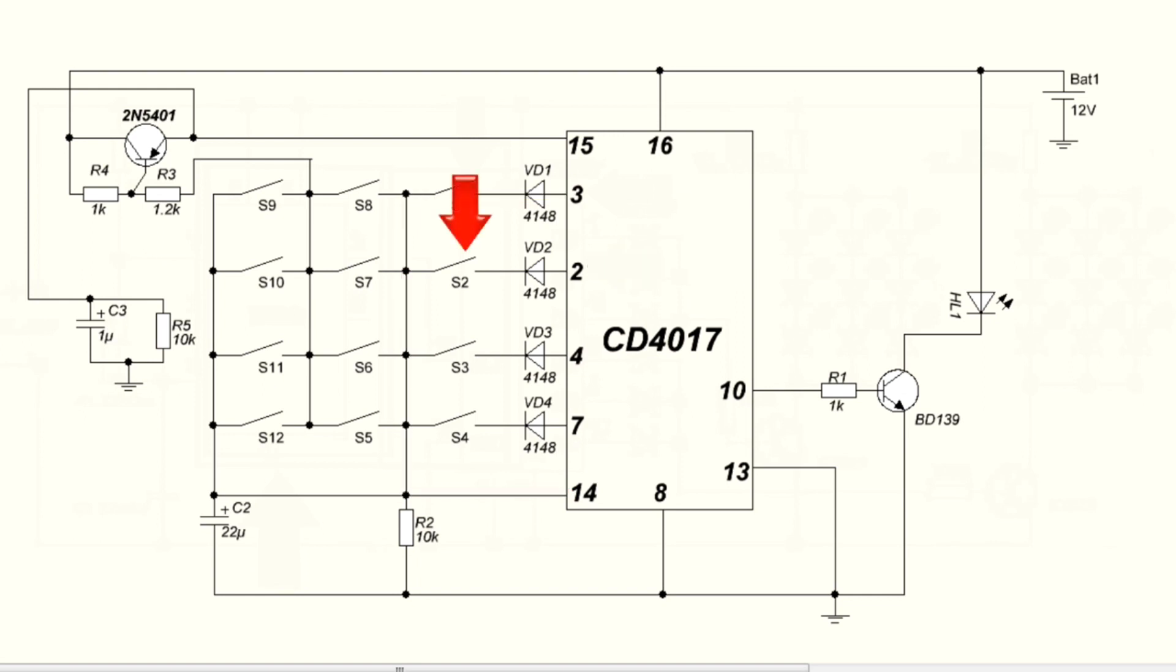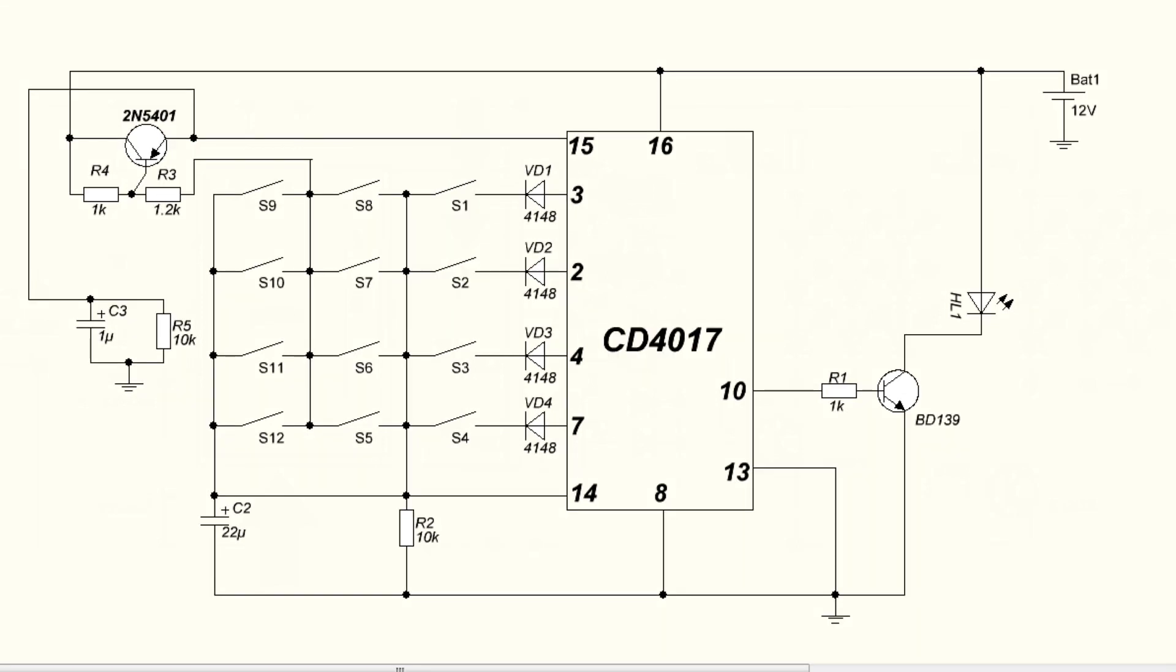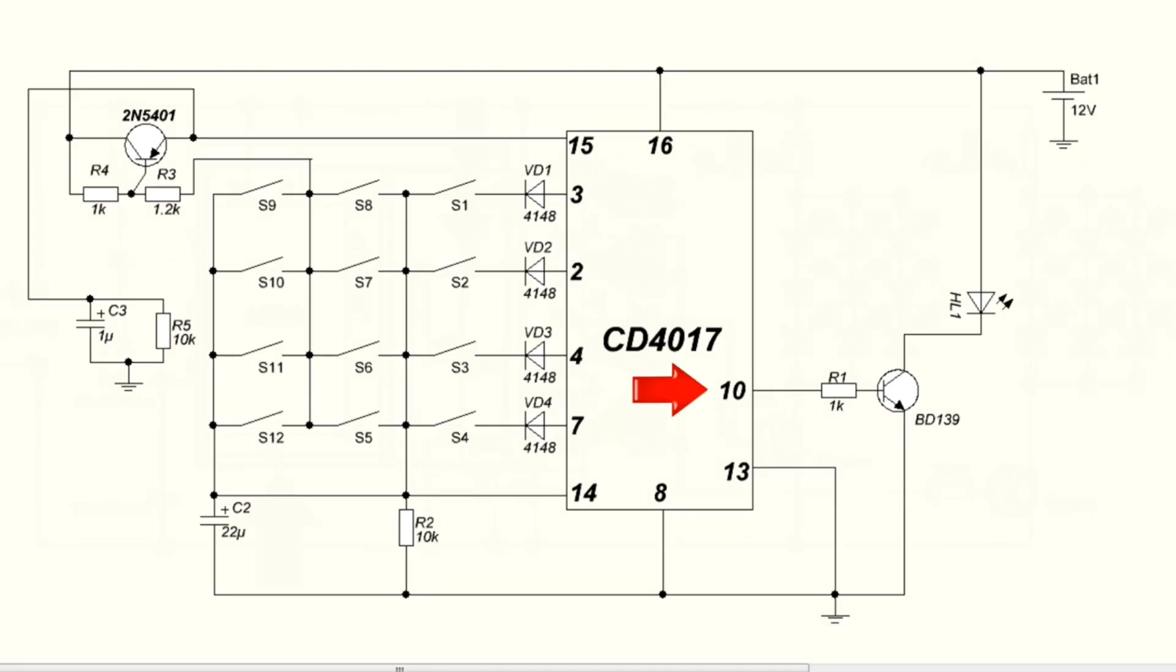Pressing S2, again logic 1 is applied to the input 14 and now opened port 4. Then in the same way pin 7 is opened and finally the output 10. This signal from pin 10 opens transistor which in turn can drive the load.